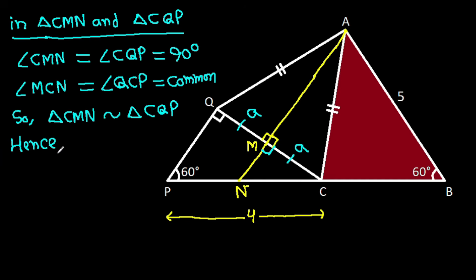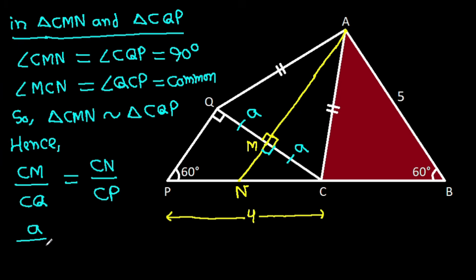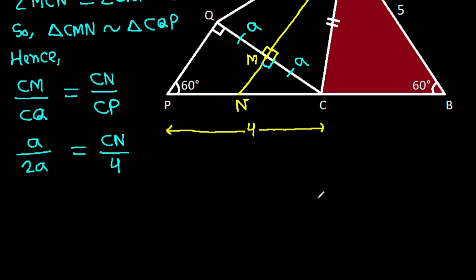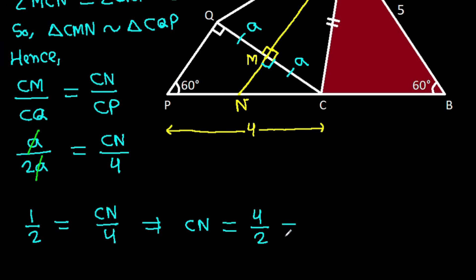Hence, CM over CQ equals CN over CP. CM is A, CQ is A plus A which is 2A. So A over 2A equals CN over 4, which gives 1 over 2 equals CN over 4. So CN equals 4 over 2, that is 2. Therefore PN equals CP minus CN equals 4 minus 2, that is 2.